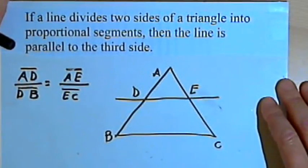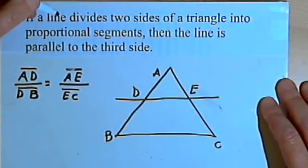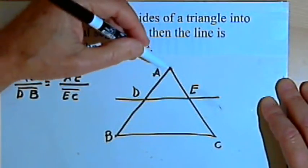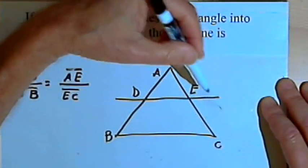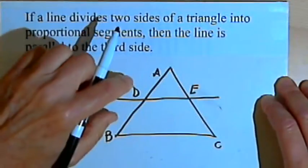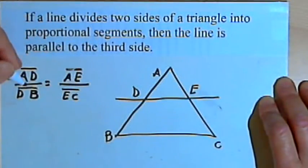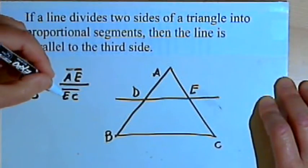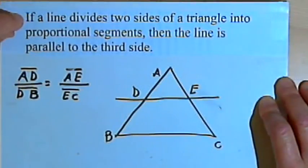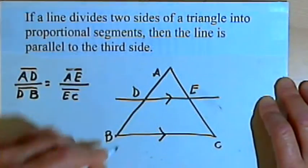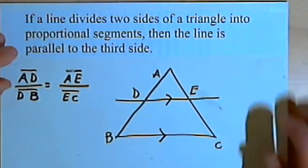Here's the converse to the theorem. The converse is just turning the theorem around. It says: if a line divides two sides of a triangle into proportional segments, then the line is parallel to the third side. So once again I've got triangle ABC, and I've drawn line DE through two sides, AB and AC. I know that it's divided those two sides into proportional segments — line segment AD over line segment DB equals line segment AE over line segment EC. Since that's the case, the converse of the side-splitter theorem says that line DE is parallel to side BC.